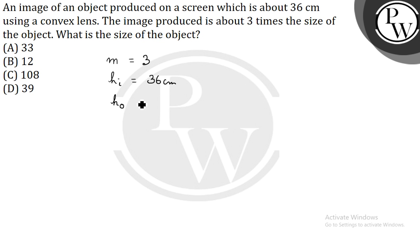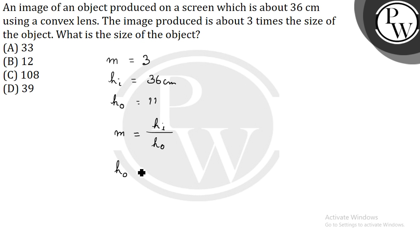According to the formula, magnification equals height of the image divided by height of the object. So height of the object equals 36 divided by 3, which gives us 12 centimeters. So the correct answer here is 12 centimeters.